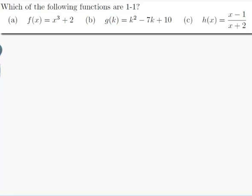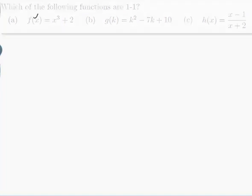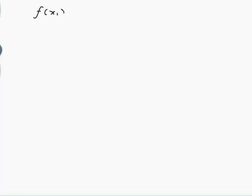In order to know whether they're 1 to 1, I need to know what 1 to 1 means. Looking up the definition, it says that a function is 1 to 1 if f of x1 equals f of x2 implies that x1 equals x2. Let me write that up so I know what I'm looking for.